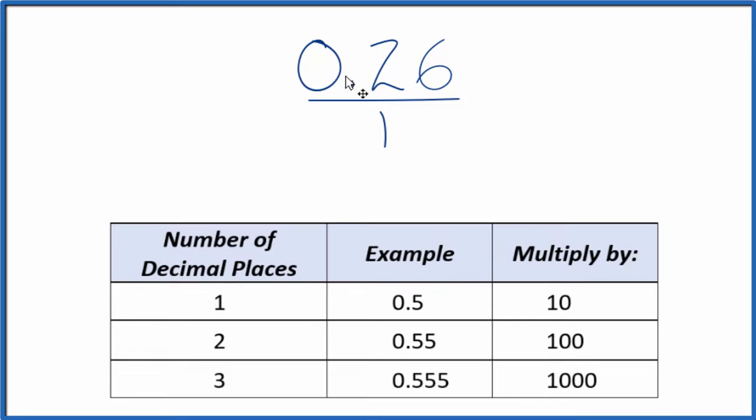What we need to do is get this 0.26 to a whole number, and if we multiply times 100, that'll do it. So 100 times 0.26 equals 26, so we have a whole number.